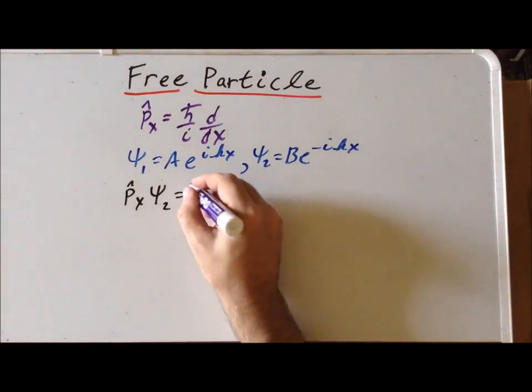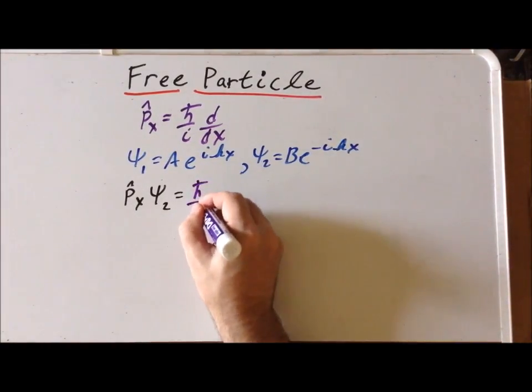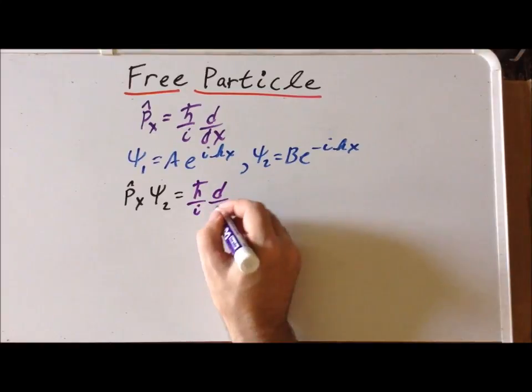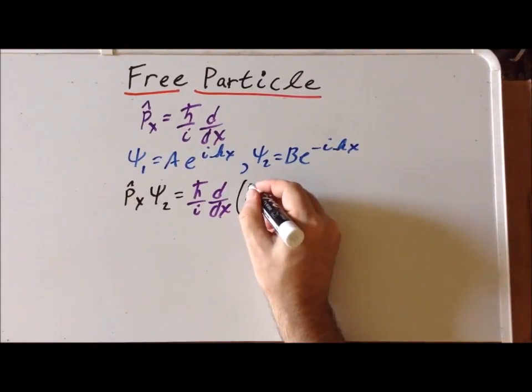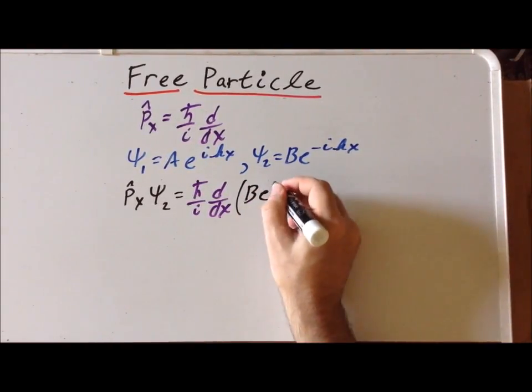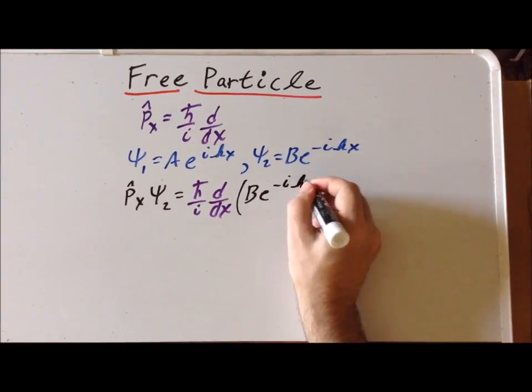So what is this going to be equal to? The operator again is h-bar over i times the first derivative with respect to x, and it's going to act upon our wave function, which in this case is B times e to the minus i kx.